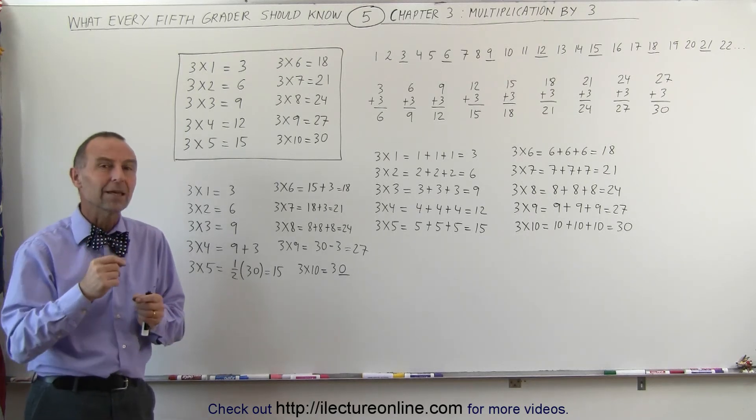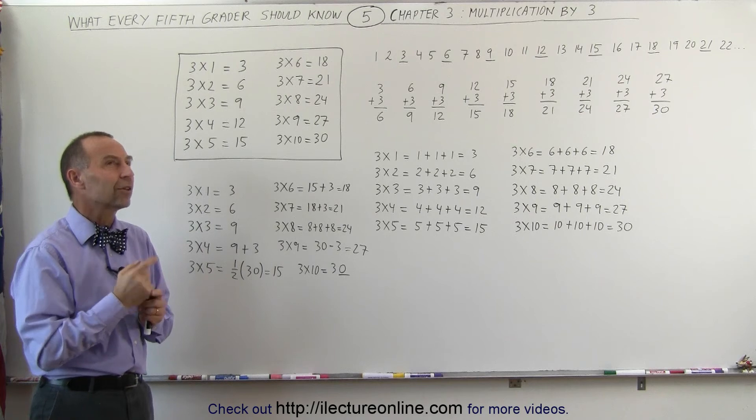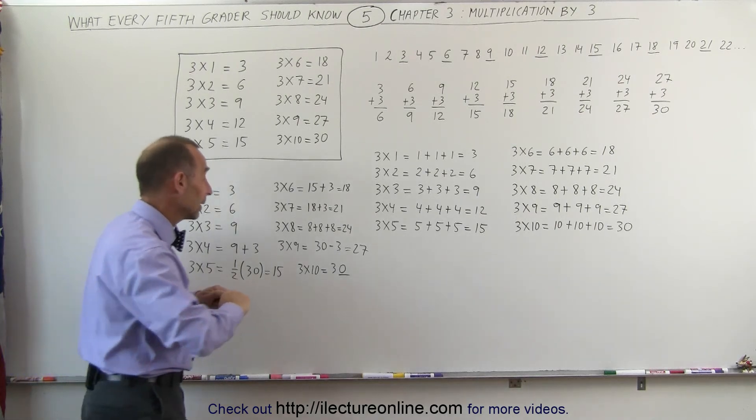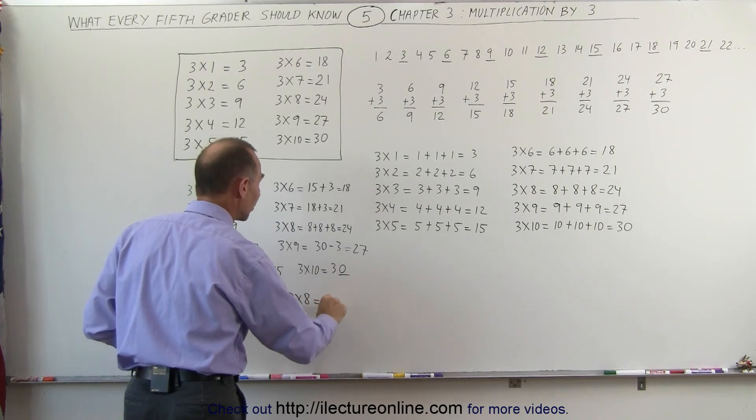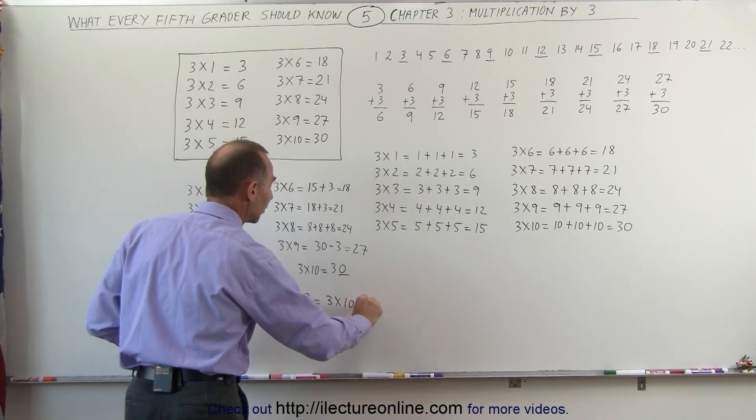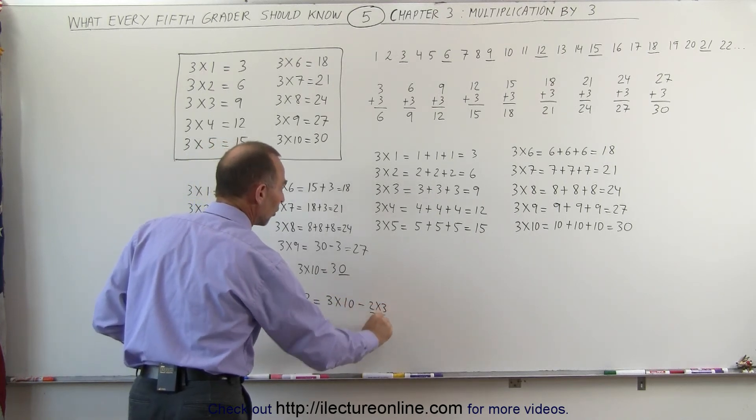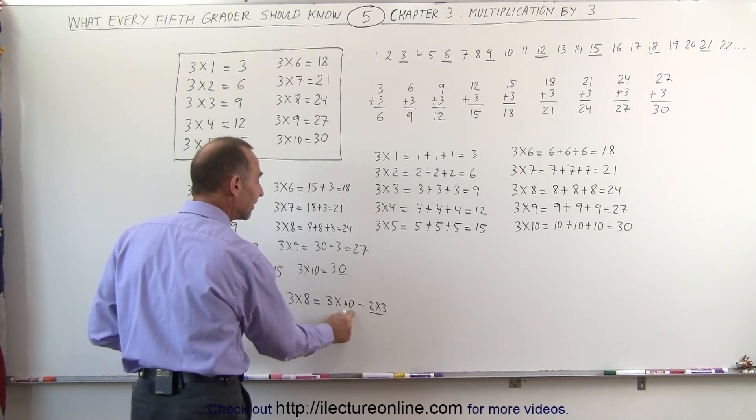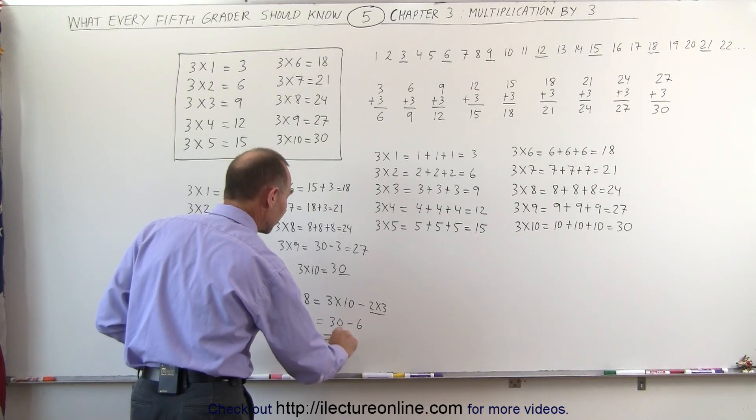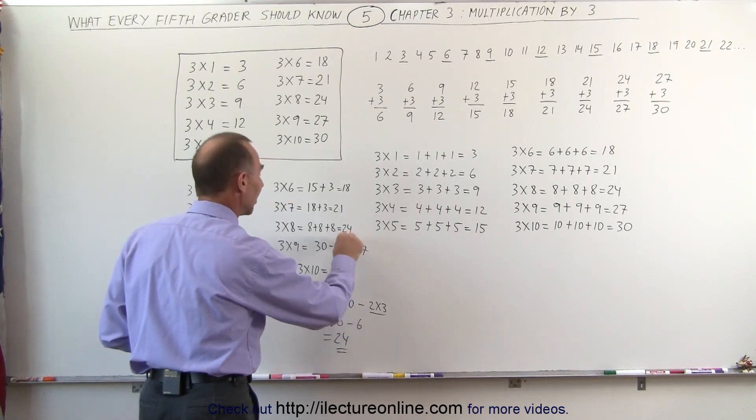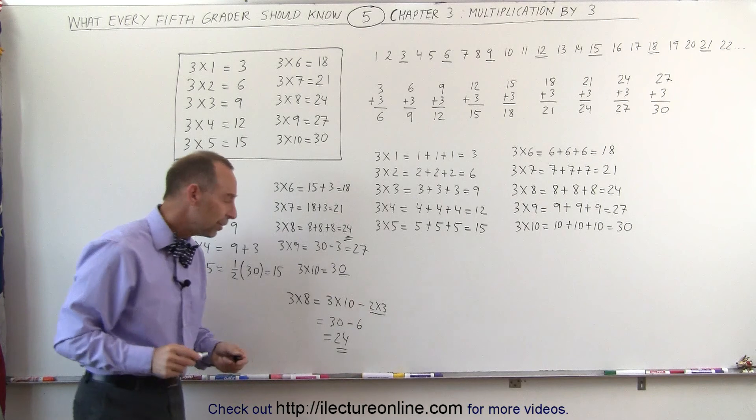It's not necessary that you know it immediately, but when you think about it for a few seconds, you can figure it out. So let's take a look at that. 3 times 8 would be the same thing as saying 3 times 10 minus 2 times 3, because 8 is 2 less than 10, so this would be equal to 30 minus 2 threes, which is 6, and that's equal to 24, which is the same answer that we got right over there.